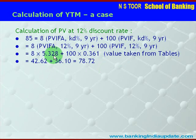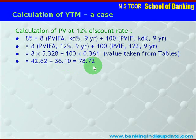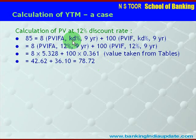Now calculating: 8 × 5.328 = Rs. 42.62, and 100 × 0.361 = Rs. 36.10. This gives us the present value of the bond's cash flows. However, this present value is less than the purchase price of Rs. 85, so 12% cannot be the YTM. It should be something less than 12%.